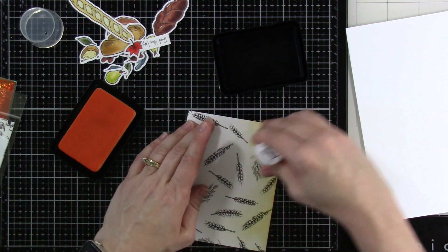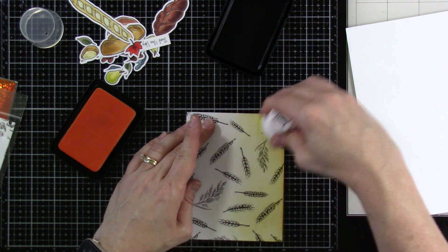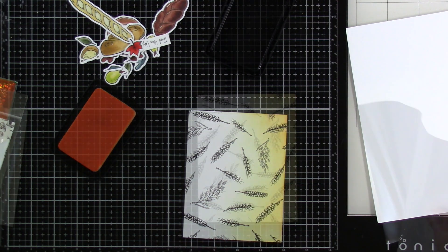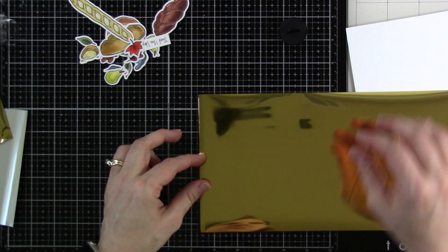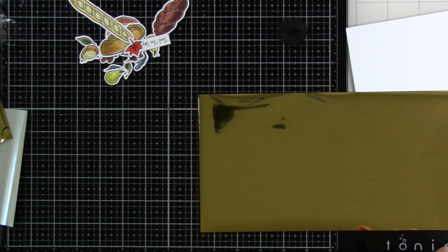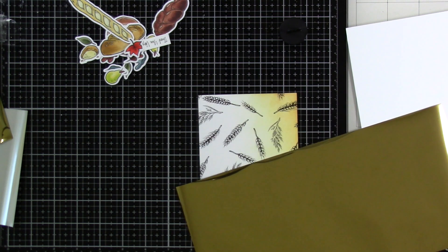So I've got some Over the Moon Simon Hurley Create ink and I've got a blending buddy and I'm going to blend that at the bottom just so it looks nice and ombre and then I'm bringing in some of the deco foil foil that I have.